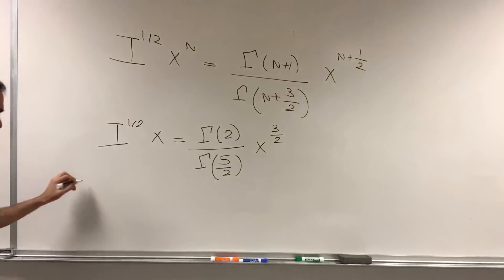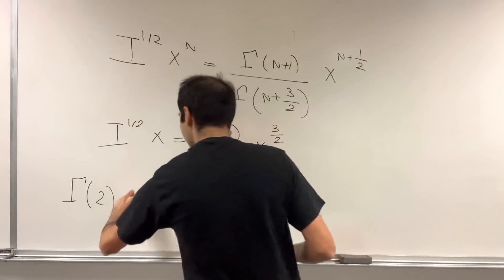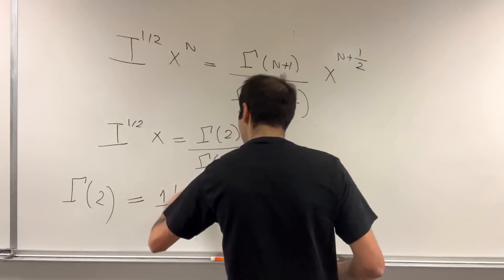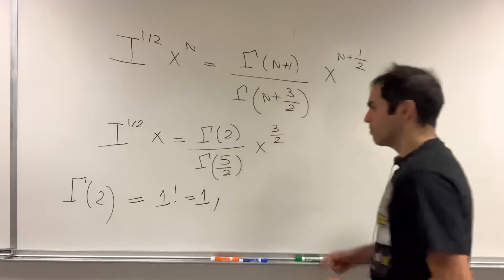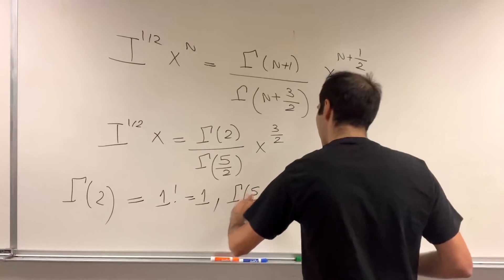Okay, and now let's evaluate those gamma functions. So, gamma of 2, remember this factorial business, that's 2 minus 1 factorial. So, 1 factorial, which is 1. So, the top is 1.